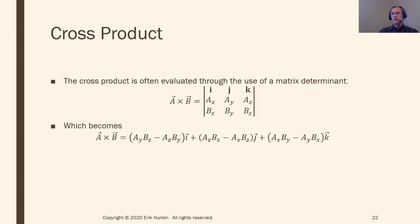The second way to evaluate the cross product is with the component formula. A cross B has x component Ay·Bz minus Az·By, y component Az·Bx minus Ax·Bz, and z component Ax·By minus Ay·Bx. Most people get this by taking the determinant of the 3x3 matrix with i, j, k in the first row, Ax, Ay, Az in the second row, and Bx, By, Bz in the third row. If you put a minus sign on the j term when expanding the determinant, the result is the same equation — just with the order of terms reversed.